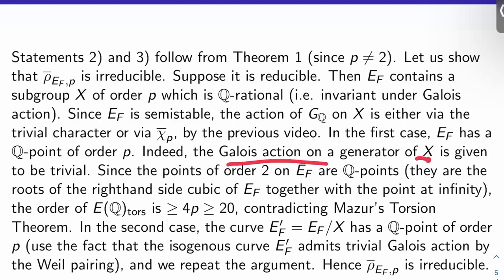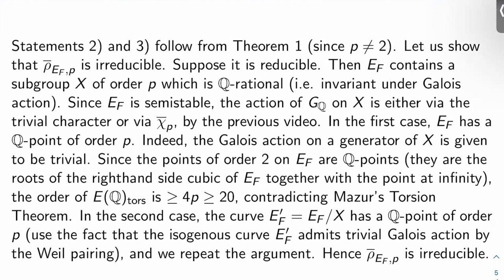Okay, well, there's your point of order P, the generator. And it's defined over Q. All right. But look, the points of order 2 on E_F are Q points. Because what are the points of order 2 on an elliptic curve given in short Weierstrass form? They're the point at infinity, and then they're the roots of the cubic on the right-hand side.